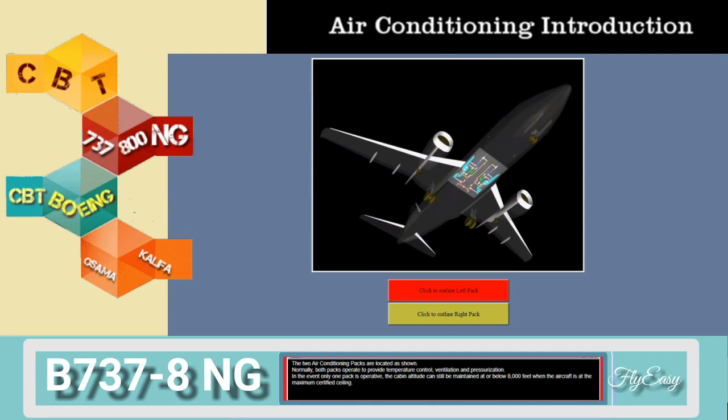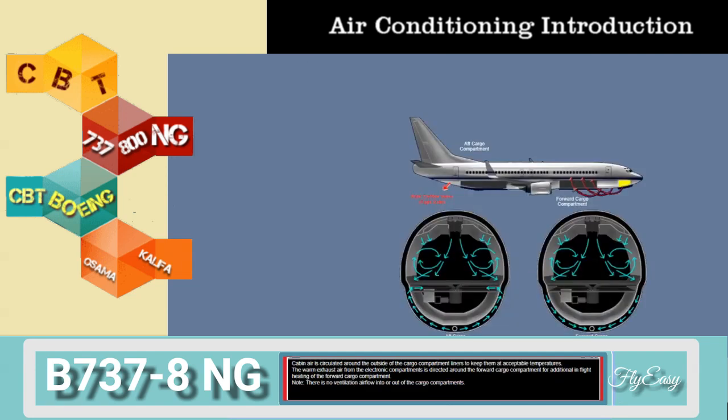The two air conditioning packs are located as shown. Normally both packs operate to provide temperature control, ventilation, and pressurization. In the event only one pack is operative, the cabin altitude can still be maintained at or below 8,000 feet. When the aircraft is at the maximum certified ceiling, cabin air is circulated around the outside of the cargo compartment liners.